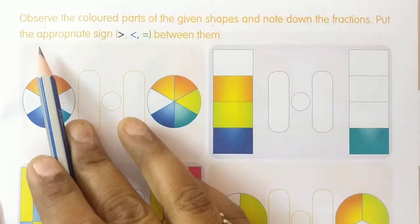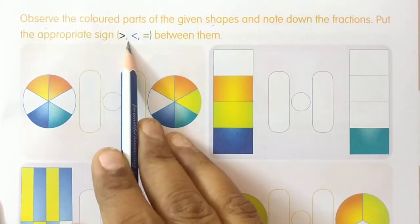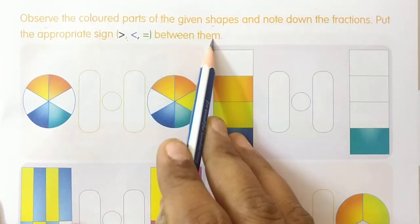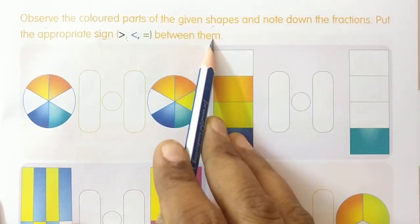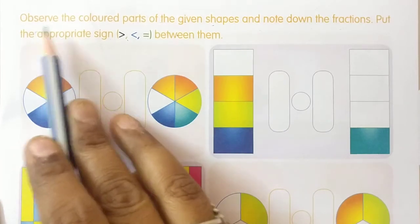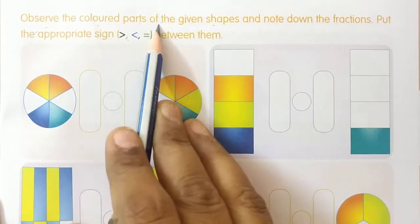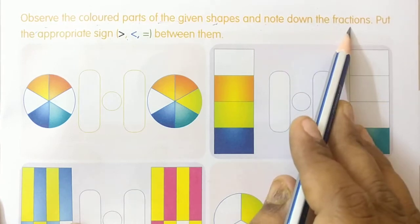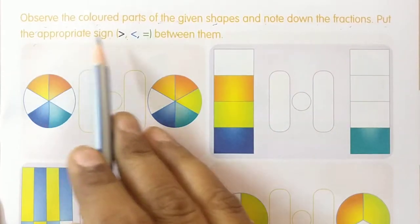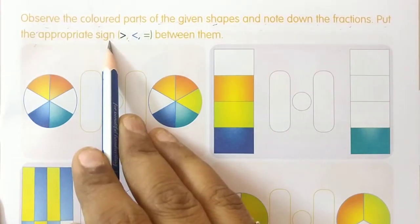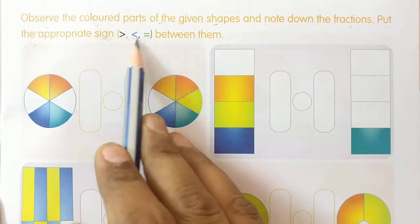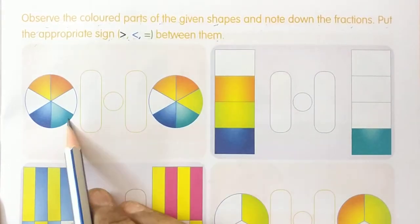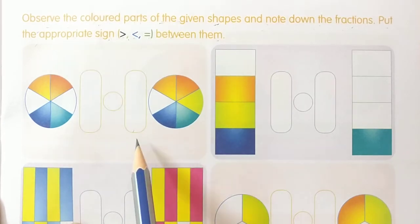Put the appropriate sign — greater than, less than, or equal to — between them. Once again reading the question: observe the colored parts of the given shapes and note down the fractions, then put the appropriate sign greater than, less than, or equal to between them. Now here they have given some shapes with fractions.